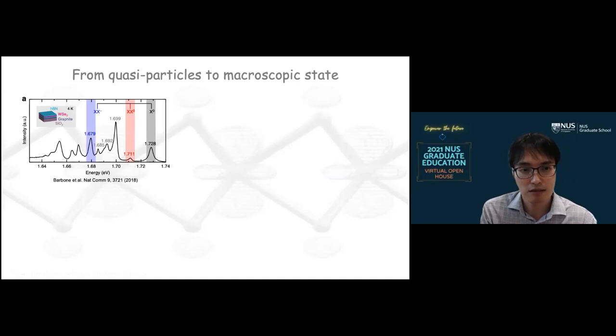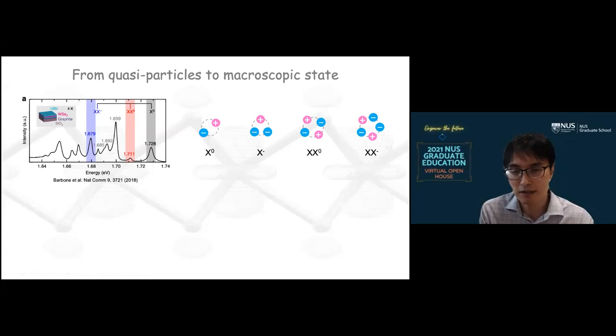And these quasi-particles can be actually observed fairly easily by spectroscopic means. So this is an example of an optical spectrum, emission spectrum of one of the two-dimensional semiconducting material. And you see a bunch of resonance peaks, which actually can be assigned to various quasi-particles, such as an exciton or a charged exciton, which consists of two electrons and one hole, a biexciton, which consists of two excitons together, or even a five particle composite particle called a charged biexciton.